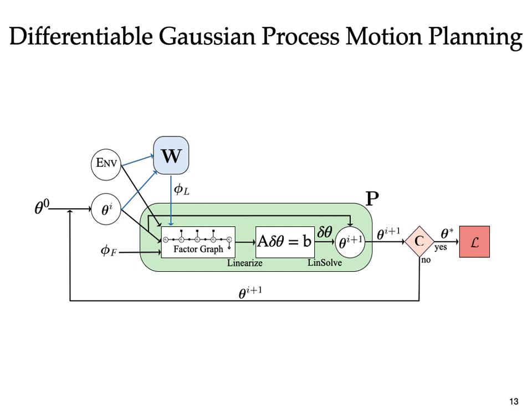Finally, the output of the planner is scored using a loss function, such as deviation from an expert trajectory. All the computations performed are completely differentiable and the gradients of the loss function with respect to the learned parameters phi l can be calculated using backpropagation.